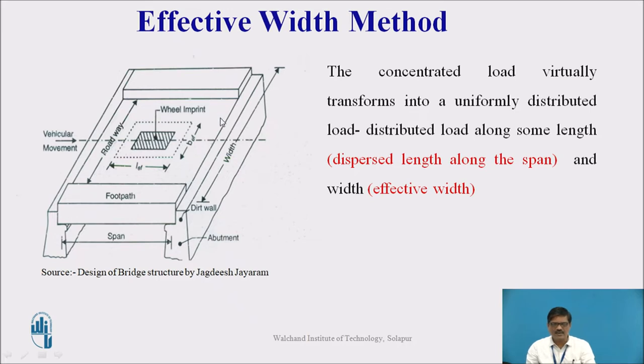In between the two footpaths, there is a carriageway width, also called roadway. Suppose there is a vehicle moving on the slab and the wheel imprint is shown here with the help of hatched lines.